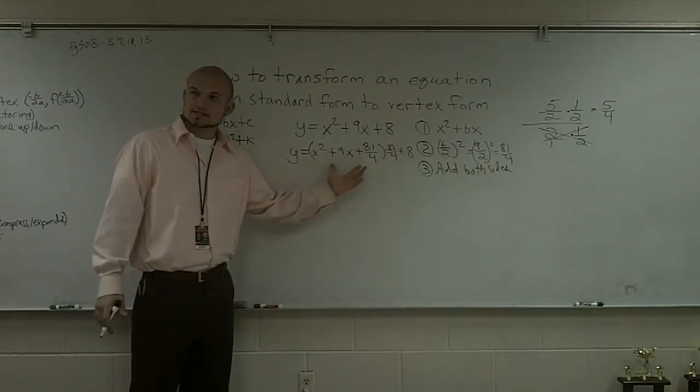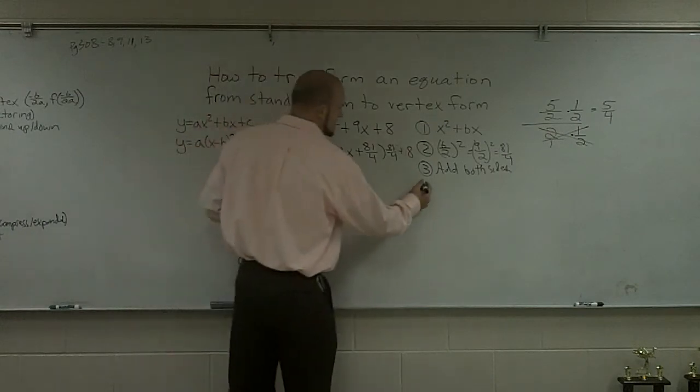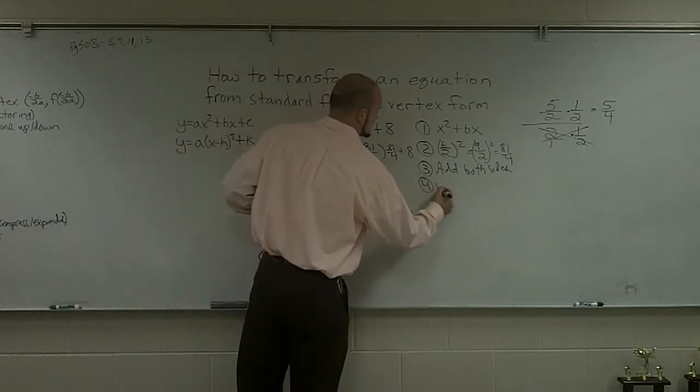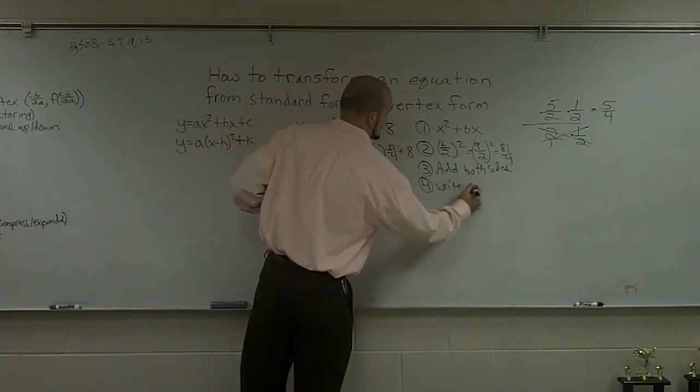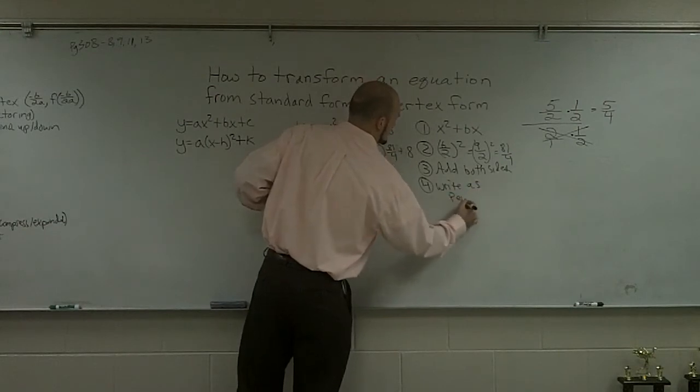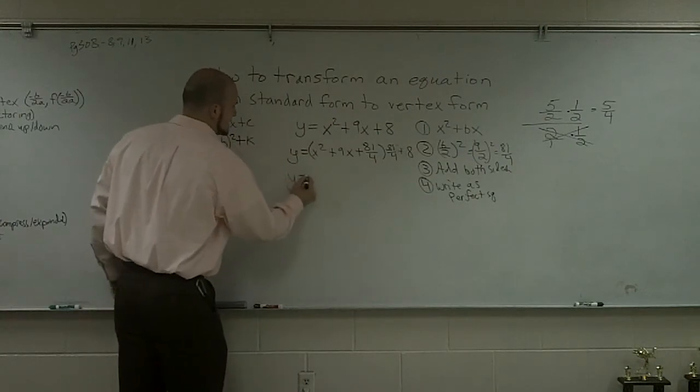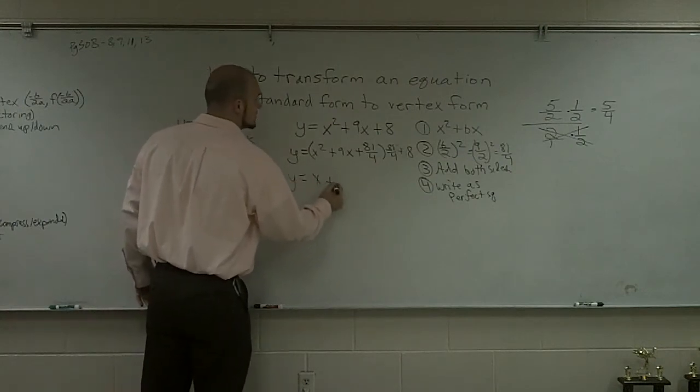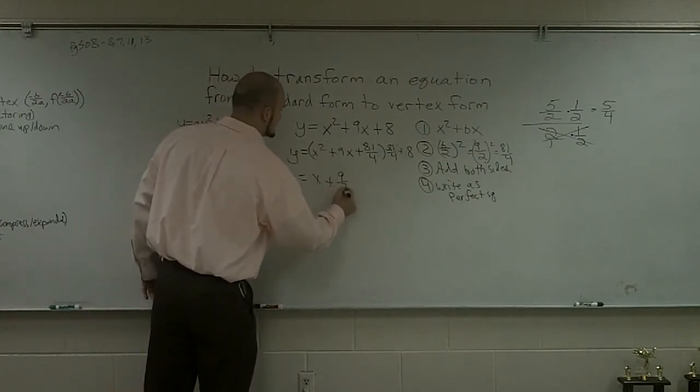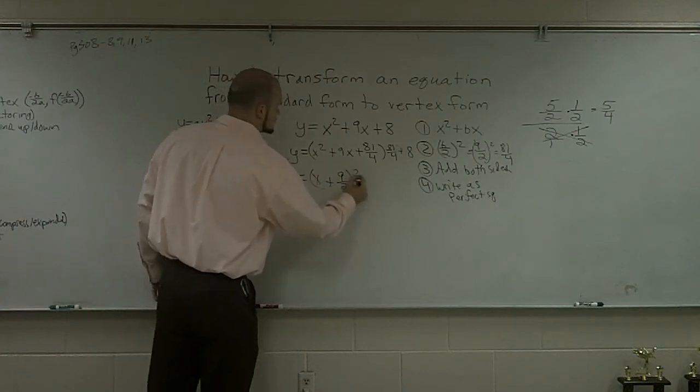Now, I can look at this, and I can rewrite this as a perfect square. So y equals x plus 9 halves squared.